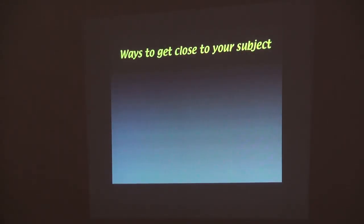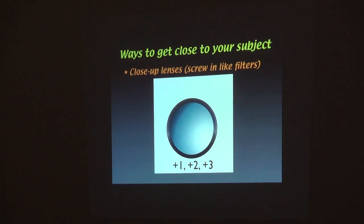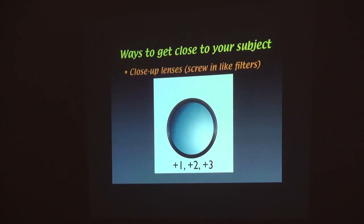So how do you get close to your subject? The simplest and cheapest way — and you can all do this — is a close-up filter. It looks just like a regular filter, it's clear, but it's not flat. You put it in front of your lens and it allows you to get closer. Plus-one lens, you get so close; plus-two, plus-three. That's the first step. When I first started photography, these were like 10 bucks a piece — I have no idea what they cost now, maybe around 40 dollars for a cheaper one. You put it in front of your lens, it's no longer a regular lens — it's a macro lens. Even some point-and-shoots have those available.